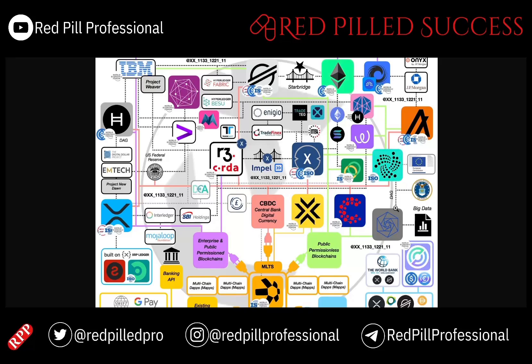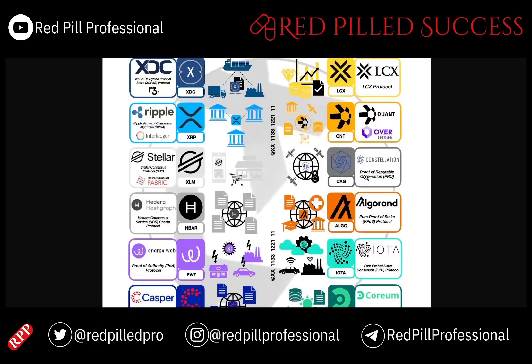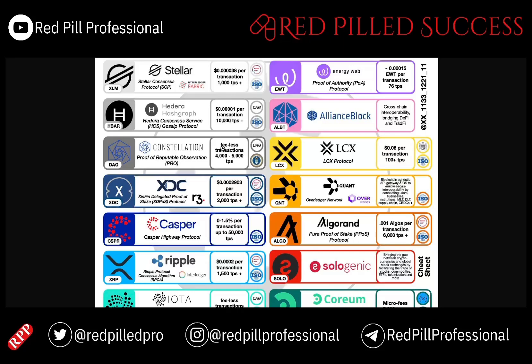However, DAG, which is shown here with its connection into the Air Force, is an extremely interesting one in my own opinion, because the U.S. government tosses around a ton of money each and every year, especially in the Department of Defense, in which DAG has a ton of extremely unique connections and applications. It operates on a proof of reputable observation consensus, and it does not have any transaction fees with a 4,000 to 5,000 TPS. It is also interesting because it is a DAG, which is a directed acyclic graph, which can be compared to how HBAR works.